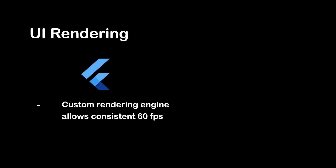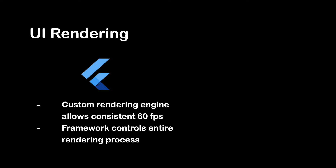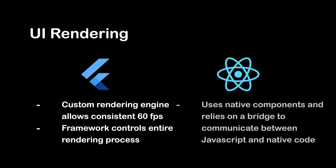Next, UI rendering. Flutter employs a custom rendering engine that allows for consistent 60 frames per second performance. The framework controls the entire rendering process, resulting in smooth animations and transitions. On the other hand, React Native uses native components and relies on a bridge to communicate between JavaScript and native code. While this approach can lead to slightly lower performance compared to Flutter in certain scenarios, React Native has made significant improvements in UI rendering over time.